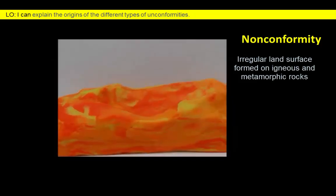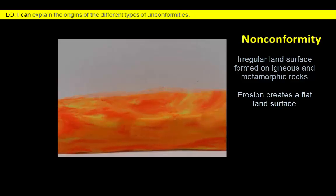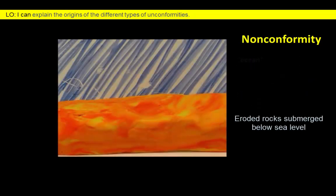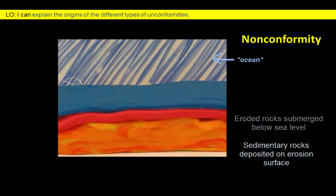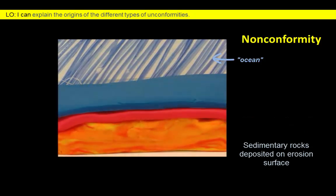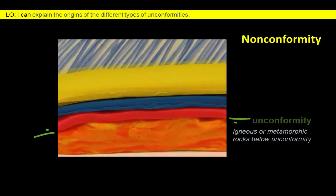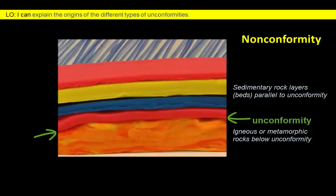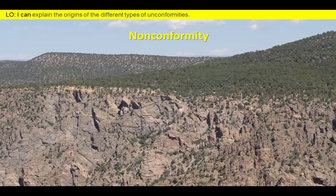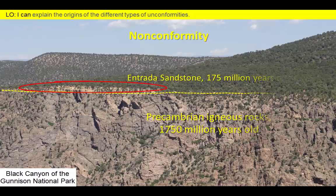The final type of unconformity is a nonconformity. A nonconformity places a sedimentary rock on top of igneous or metamorphic rock. These rocks may have been uplifted to the surface and exposed by erosion of mountain ranges that were subsequently slowly eroded before the region was resubmerged below a rising ocean. Sedimentary rocks would be deposited above these igneous or metamorphic rocks that originally formed deep within Earth's crust. In this example, a nonconformity places a sandstone formation on top of much older igneous rocks.